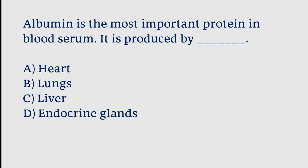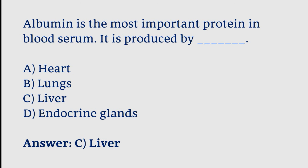Albumin is the most important protein in blood serum. It is produced by: heart, lungs, liver, or endocrine glands. The correct answer is option C. Albumin is the most important protein in blood serum and it is produced by the liver.